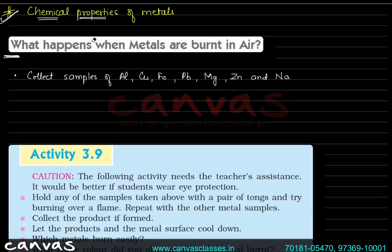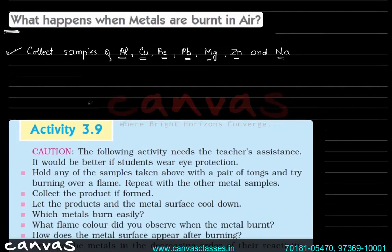So the first case: let's see what happens when metals are burnt in air. We have samples of aluminum, copper, iron, lead, magnesium, zinc, and sodium. We have an activity — Activity 3.9 — in which we will see how the reaction with air occurs and what differences are observed.